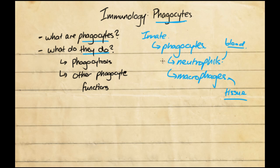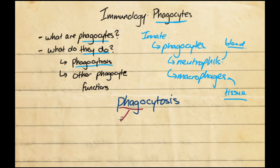What makes them phagocytes is that they undergo a process called phagocytosis. Breaking the word down: 'phago' means to devour, 'cyto' means cell, so a phagocyte is a cell which devours. And 'osis' basically means a process. So phagocytosis means the process which the cell undertakes to devour.